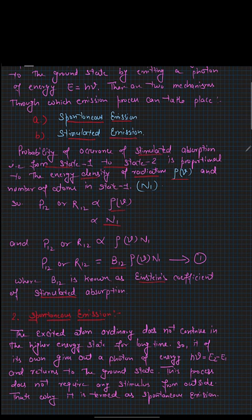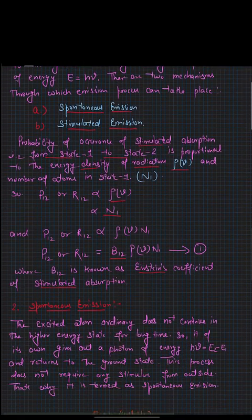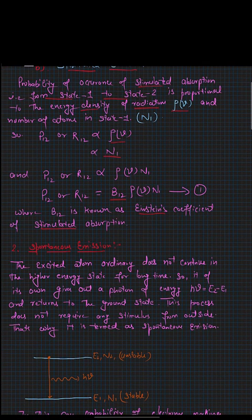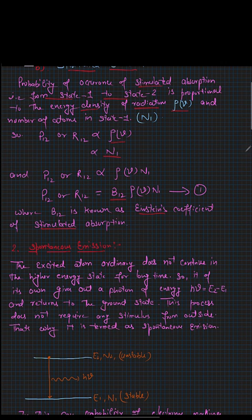Now let's talk about the first kind of emission: spontaneous emission. The excited atom does not continue in the higher energy state for a long interval of time. On its own, it gives out a photon of energy h-nu, which equals the energy difference E2 minus E1, and returns to the ground state. This process does not require any stimulus or external energy, because it is a spontaneous, natural process.